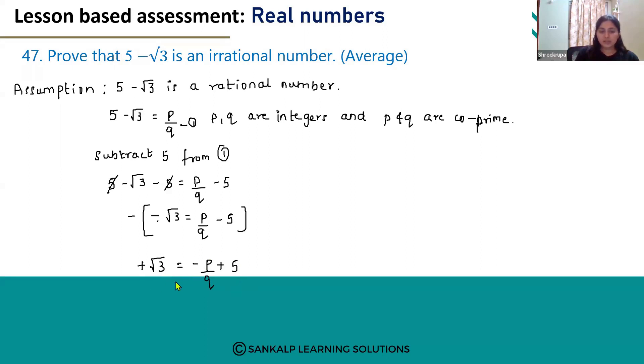Let's rearrange this. Plus root 3 is equal to plus 5 minus p by q. Again, we have to take the LCM. Upon taking the LCM, we will get 5q minus p by q.